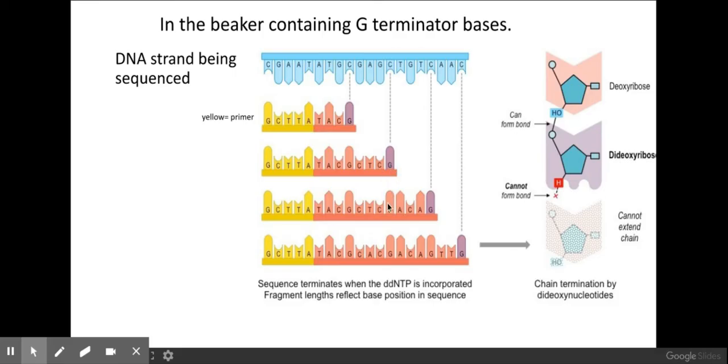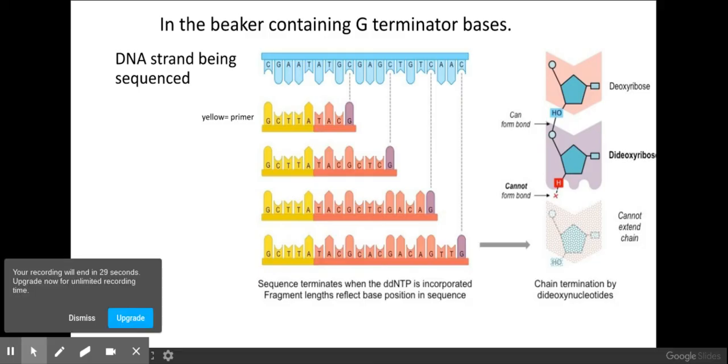But it could also not be a terminator and it could be a normal DNA nucleotide and the process would continue. As you can see here I've got various lengths of my DNA due to my terminator base kicking off my DNA polymerase, so therefore I cannot extend my DNA chain any further.